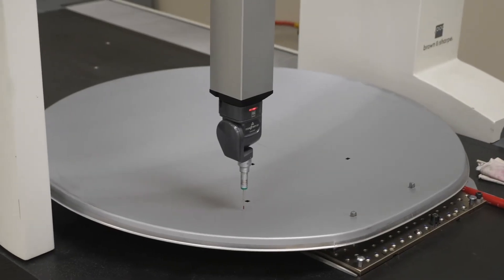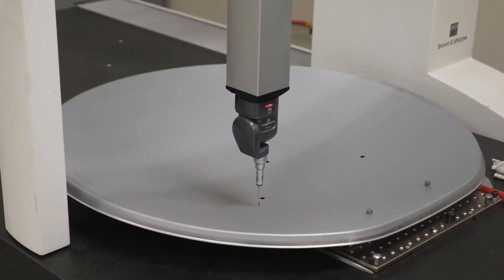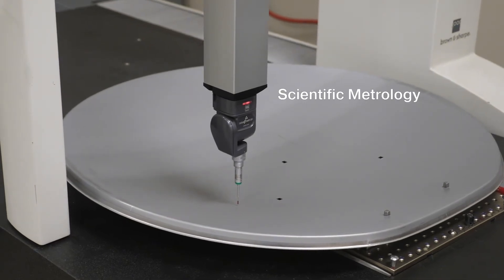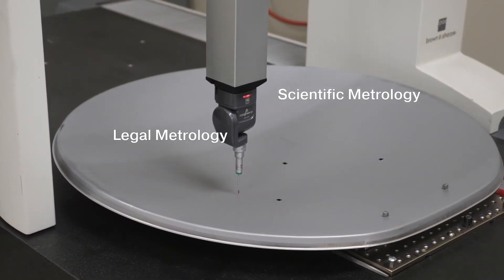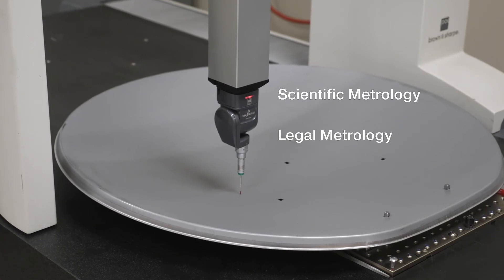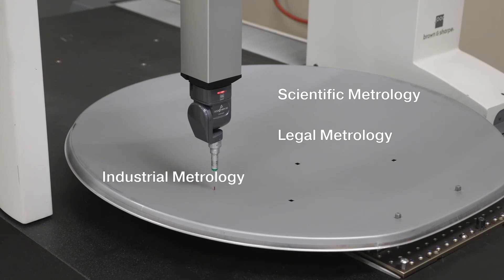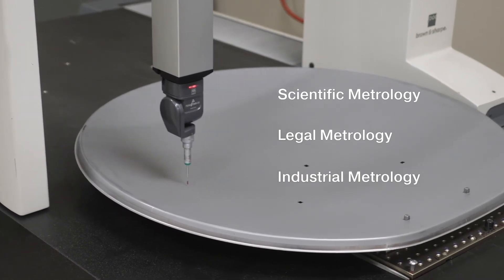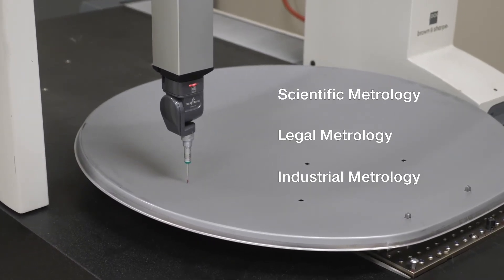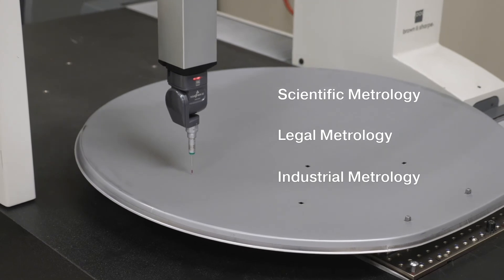There are three subfields that deal with distinct subsets of metrology. Scientific metrology sets the standards that we use as units of measurement. Legal metrology looks after the regulatory aspects of measurement and measurement instruments. And industrial metrology covers the calibration, maintenance and quality control of measurement instruments used in industry.